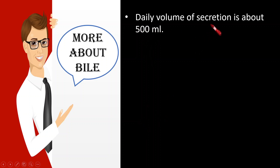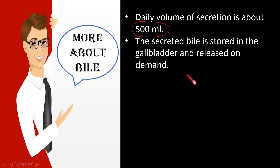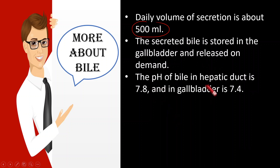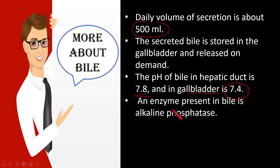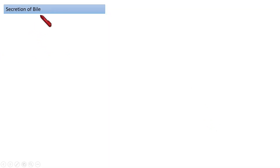The daily volume of bile secreting from the liver is around 500 ml. The secreted bile is stored in the gallbladder and released upon demand. The pH varies depending on location: in the hepatic duct the pH is 7.1, and in the gallbladder it becomes 7.4. There is also an enzyme present in bile called alkaline phosphatase, which is capable of removing phosphate groups from certain substrates.